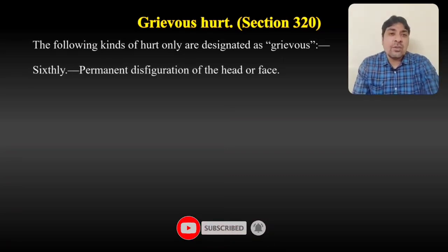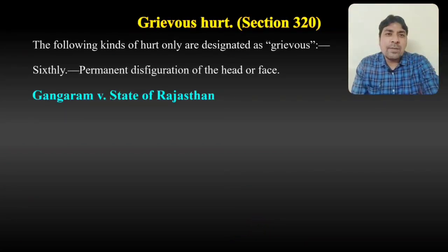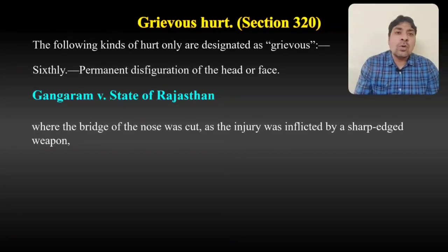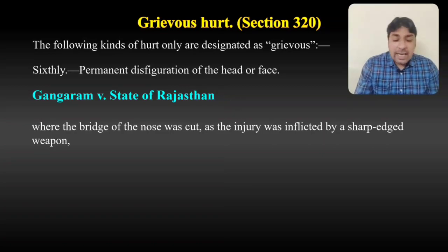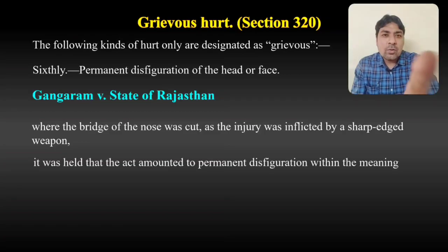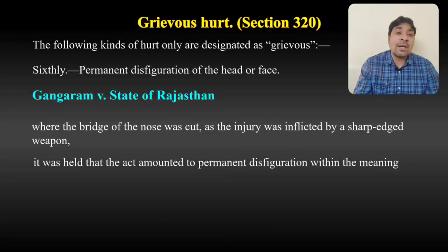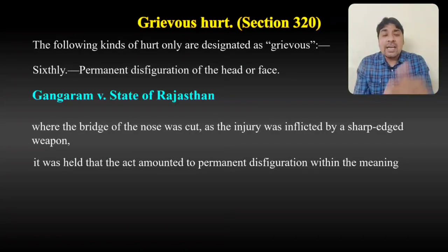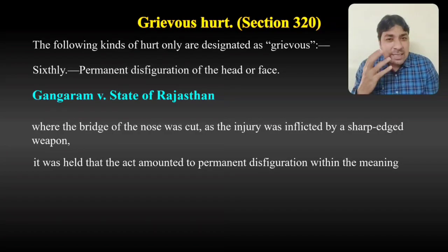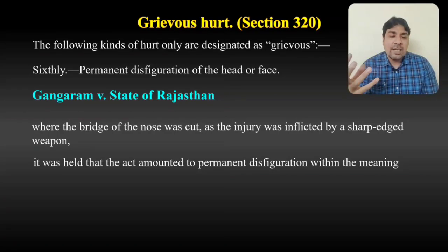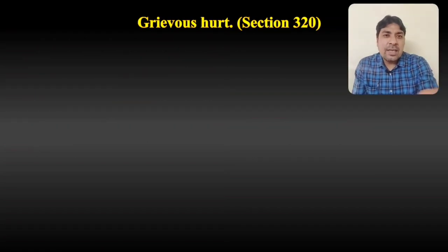The sixth type is permanent disfiguration of the head or face. In Ganga Ram versus State of Rajasthan, the bridge of the nose was cut by a sharp-edged weapon. It was held that this amounted to permanent disfiguration within the meaning of section 320. So if I attack someone's face in such a way that it is permanently disfigured, I will be liable for grievous hurt.